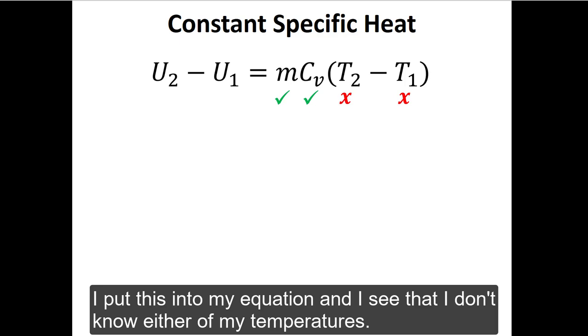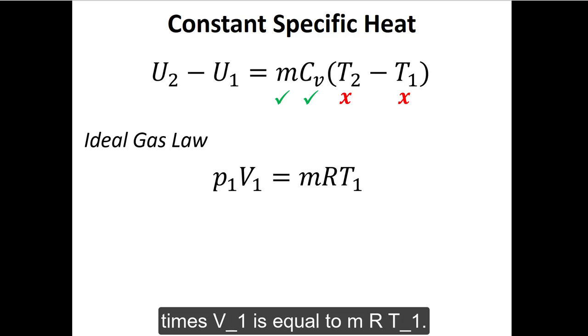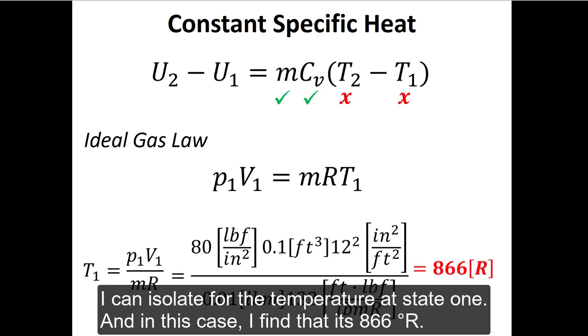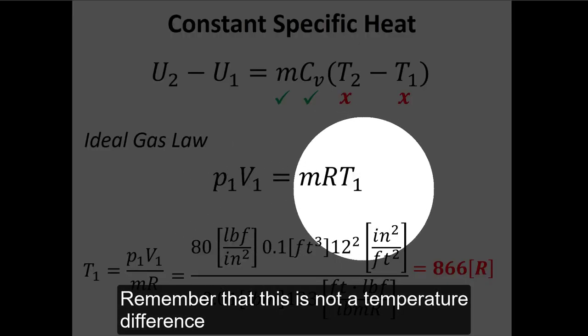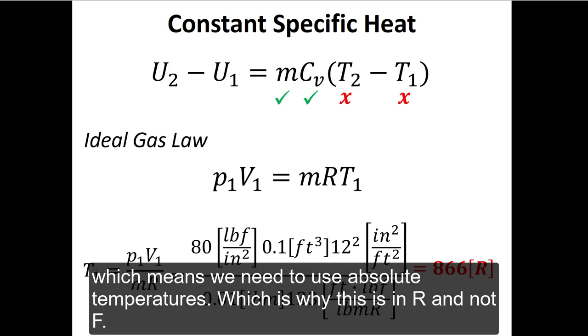I put this into my equation and I see that I don't know either of my temperatures, but I can use the ideal gas law. At state one, I know that P₁ times V₁ equals mRT₁. I can isolate for the temperature at state one, and in this case I find that it's 866 degrees Rankine. Remember that this is not a temperature difference, which means we need to use absolute temperatures, which is why this is in Rankine and not Fahrenheit.